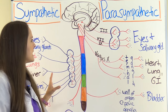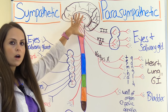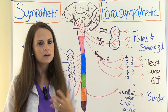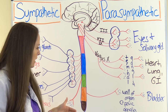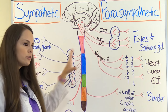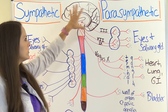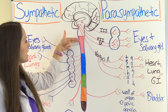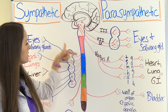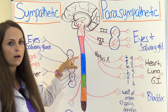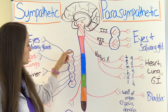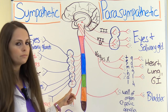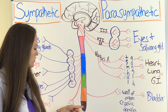Our peripheral nervous system is made up of 12 cranial nerves and 31 spinal nerves, each color-coded here. You want to note where each of these are because depending on whether we're talking about sympathetic or parasympathetic, the neurons are coming off certain sections. The cranial nerves are up in the brain stem. Then we have 8 cervical, 12 thoracic, 5 lumbar, 5 sacral, and 1 coccygeal spinal nerves.